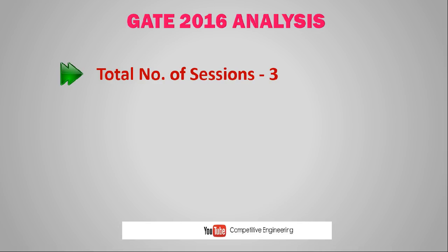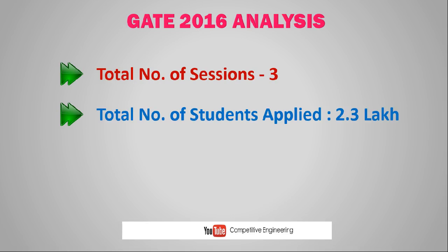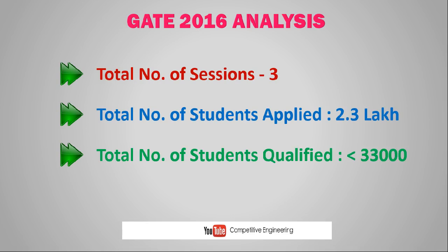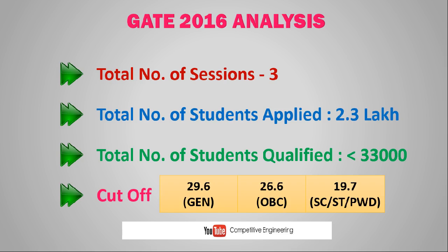Starting with GATE 2016 analysis — a brief introduction. The total number of sessions was three, meaning three question papers and three sessions. The total number of students who applied is around 2.3 lakhs, and the total number who qualified is less than 33,000, meaning nearly two lakh people were disqualified. The GATE exam is 100 marks with 65 questions. The cutoff for General is 29.6, OBC is 26.6, and SC/ST or physically challenged is 19.7.